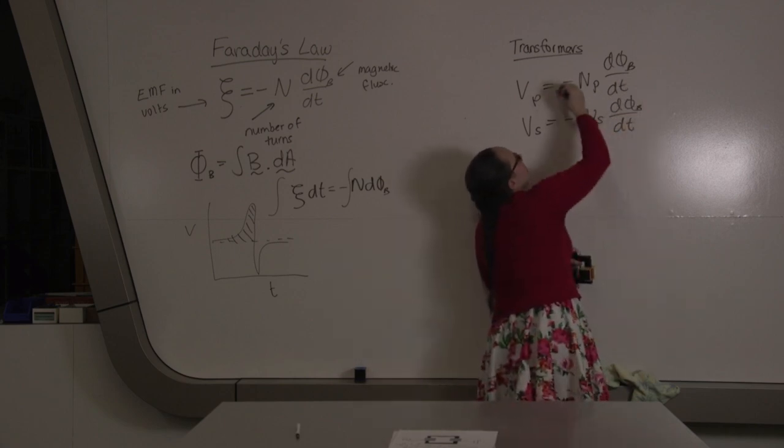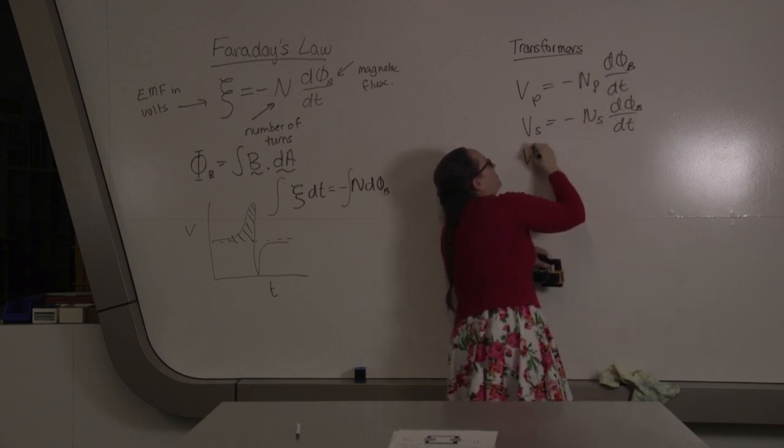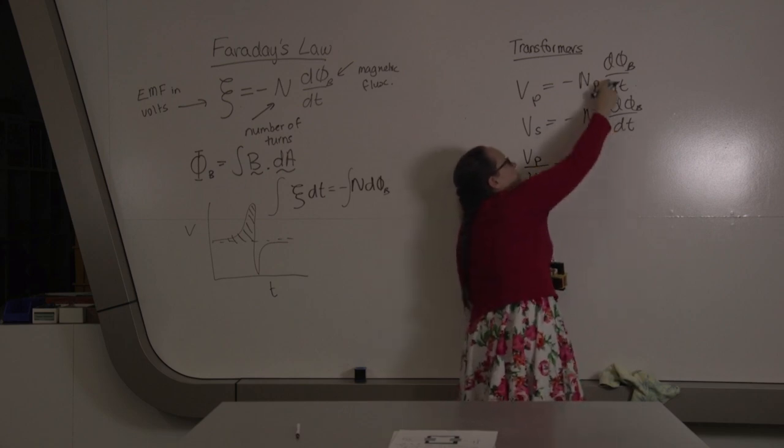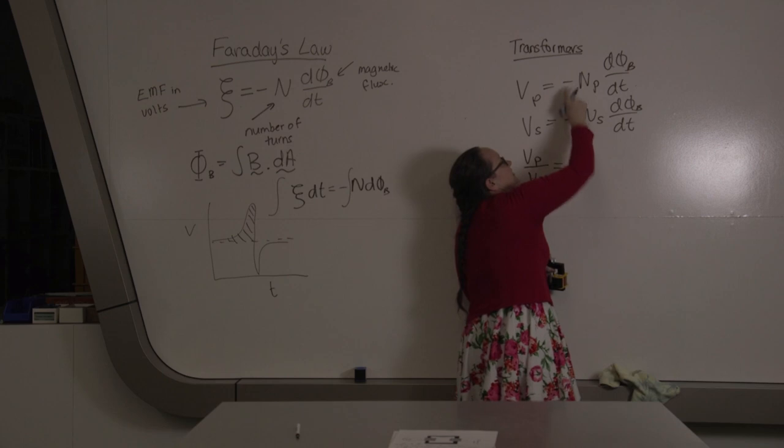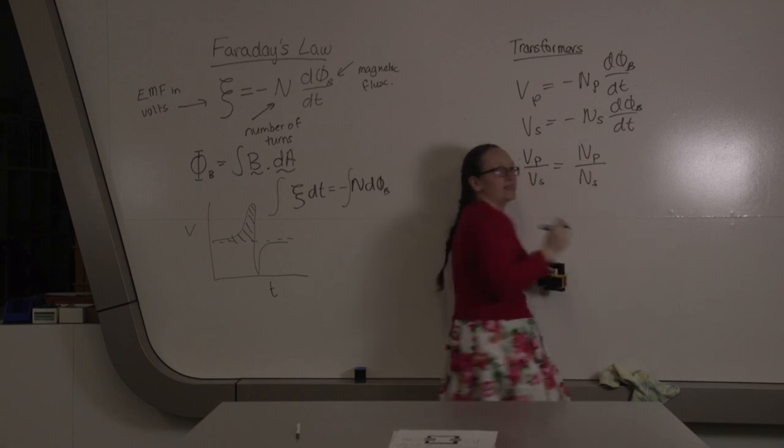What we can do is divide this top equation by this lower equation. We end up with V_p over V_s is equal to, now these terms are common so they cancel out, the negatives cancel out, and we end up with the number of turns in the primary coil over the number of turns in the secondary coil.